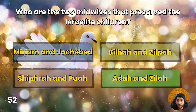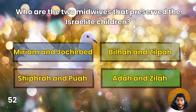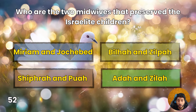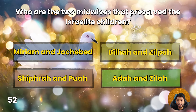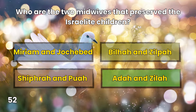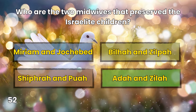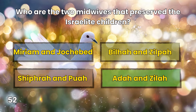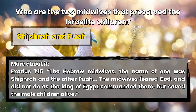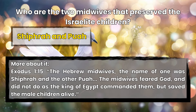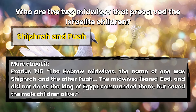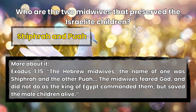Question 52: Who were the two midwives that preserved the Israelite children? Miriam and Jochebed, Bilhah and Zilpah, Shiphrah and Puah, or Adah and Zillah? Shiphrah and Puah. Exodus 1:15 — The Hebrew midwives — the name of one was Shiphrah and the other Puah. The midwives feared God and did not do as the king of Egypt commanded them, but saved the male children alive.